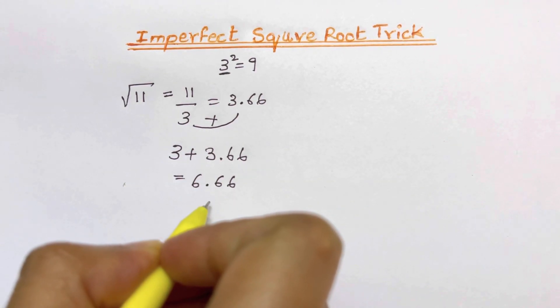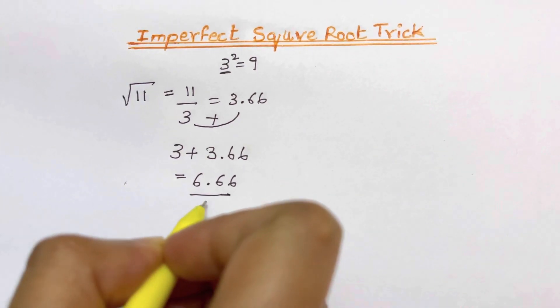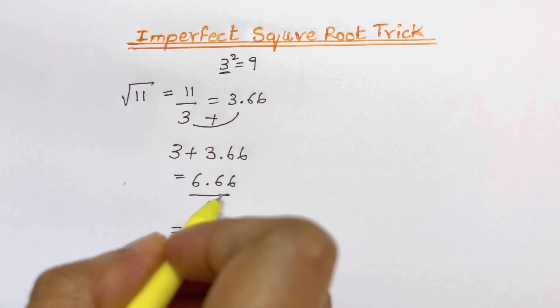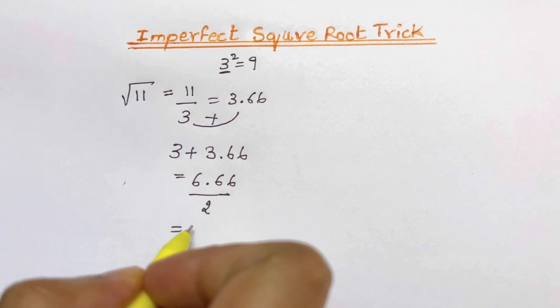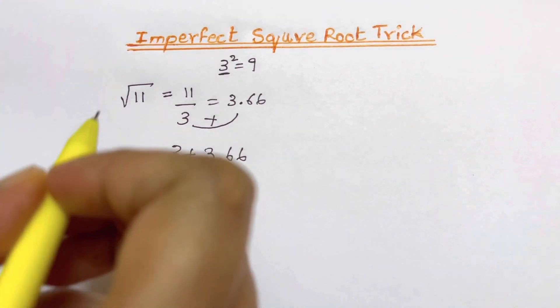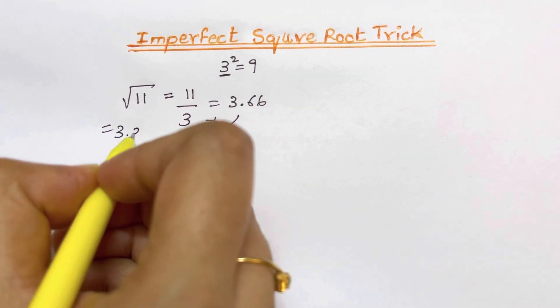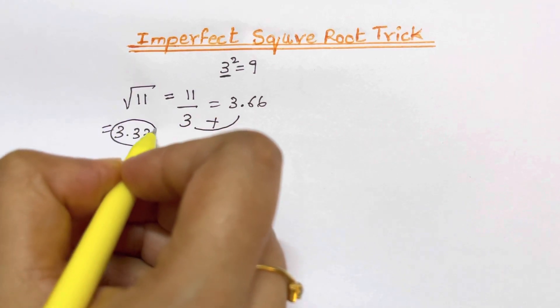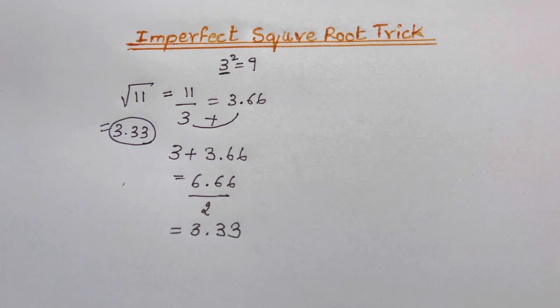Now the last step is to divide it by 2. The third and last step so 6.66 divided by 2 will give us 3.33 and that's your answer 3.33 and this is just an approximate answer which you are getting 3.33.